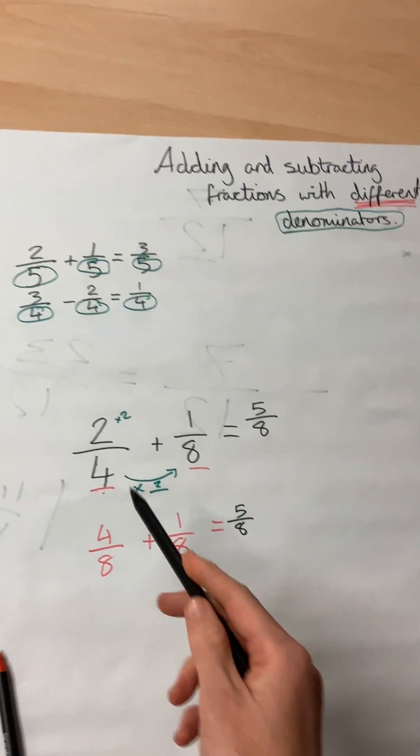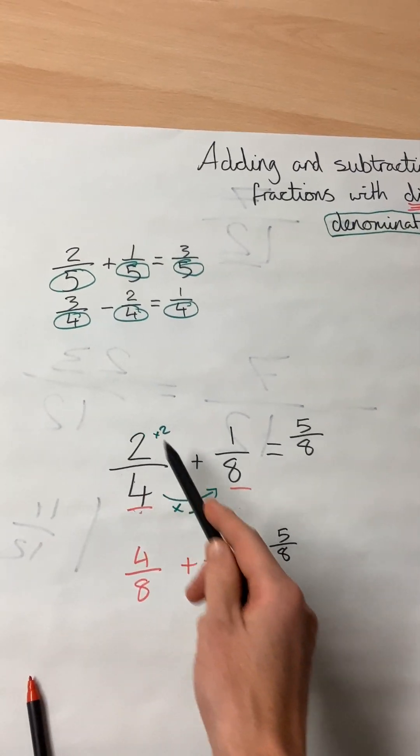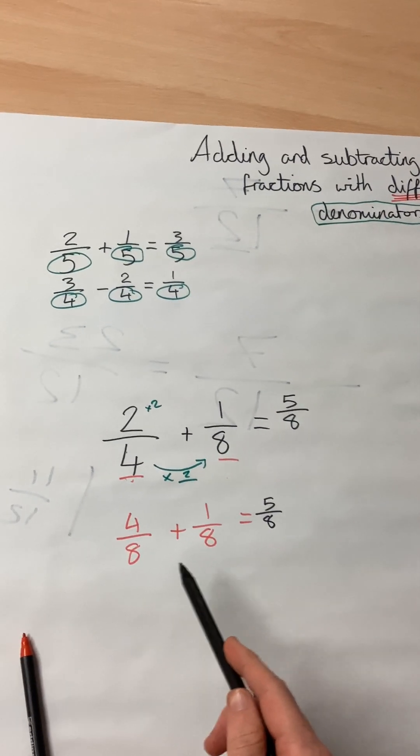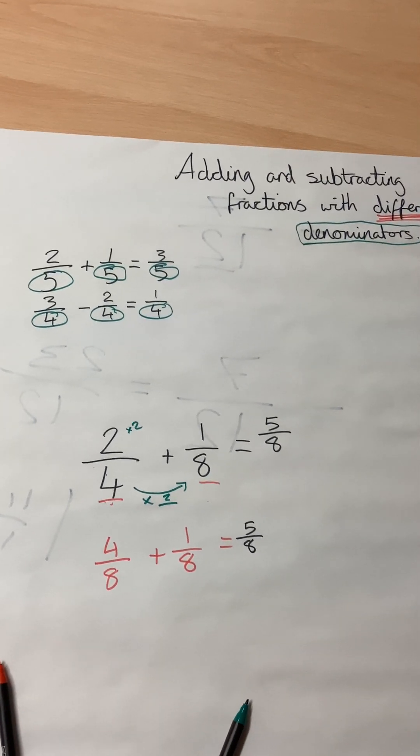And that was our original answer. So when the denominators are different, you multiply one of the fractions to make it have the same denominator.